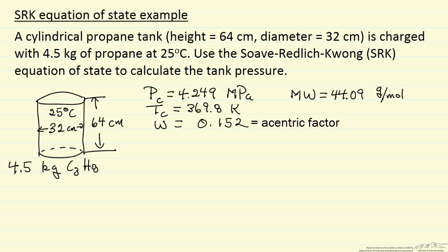So the first thing I'm going to do is calculate the number of moles. The number of moles is going to be the weight divided by the molecular weight. So 4.5 kilograms is 4500 grams, and the molecular weight is 44.09 grams per mole. So the number of moles in the tank is 102.06.